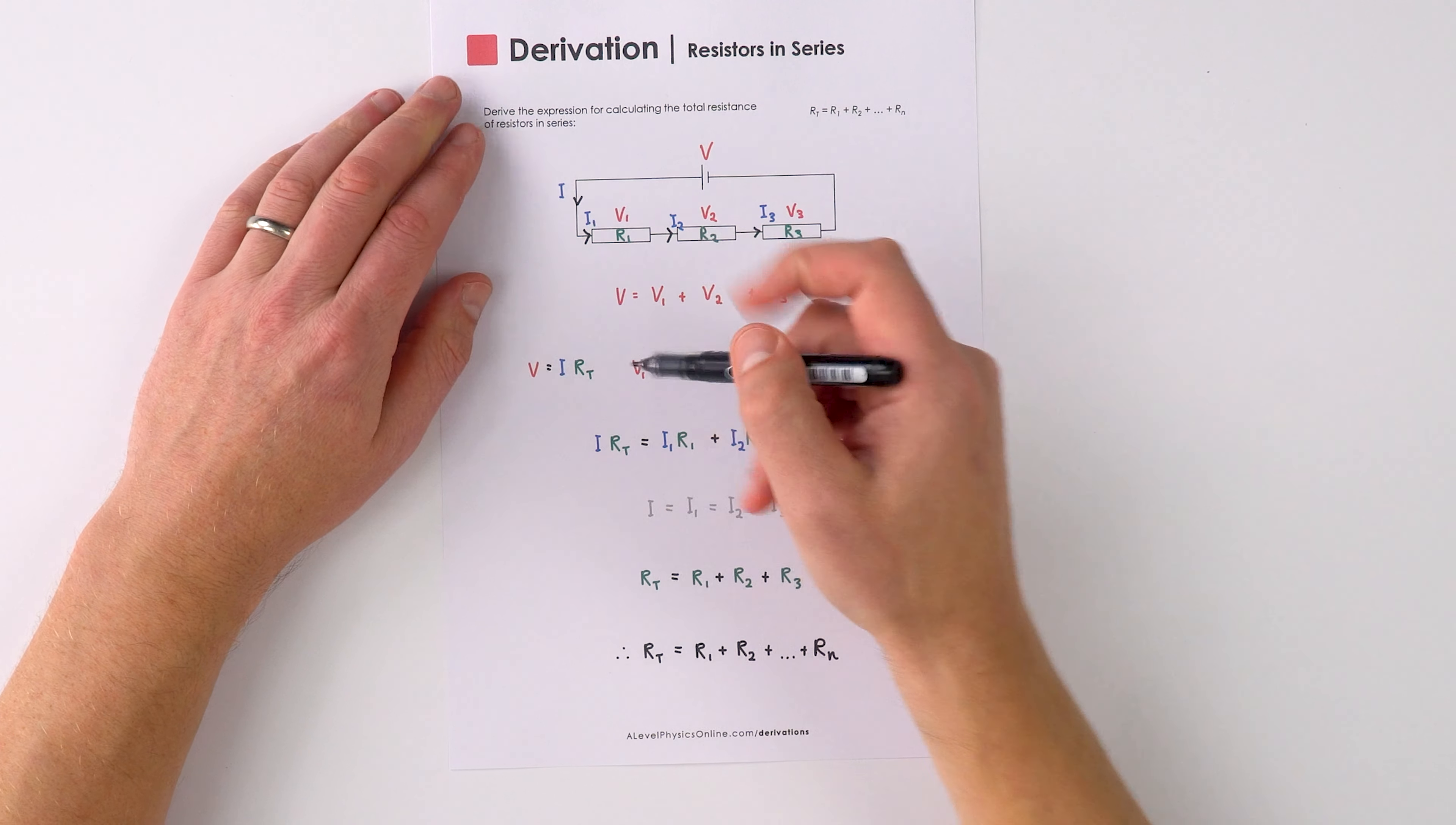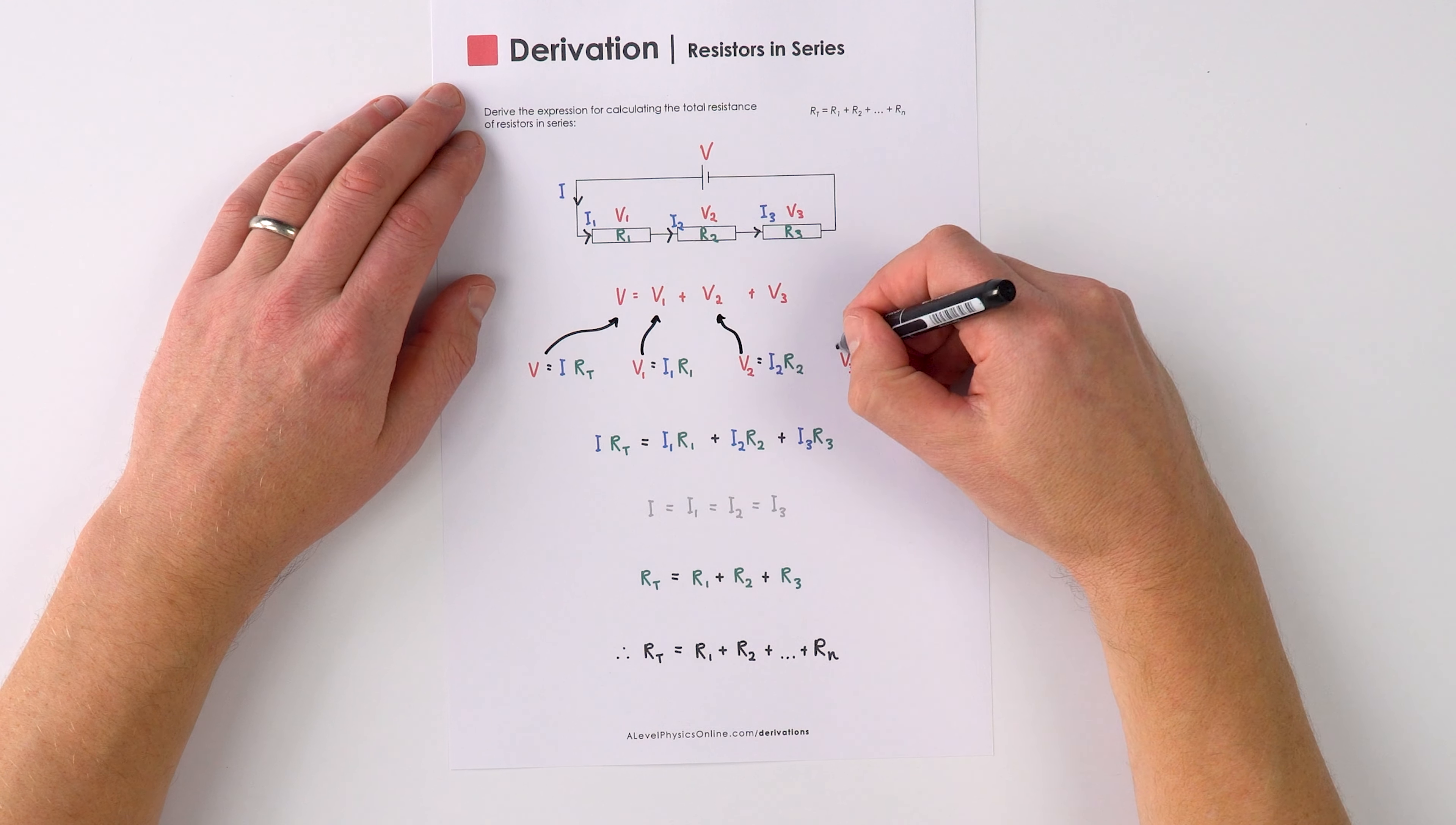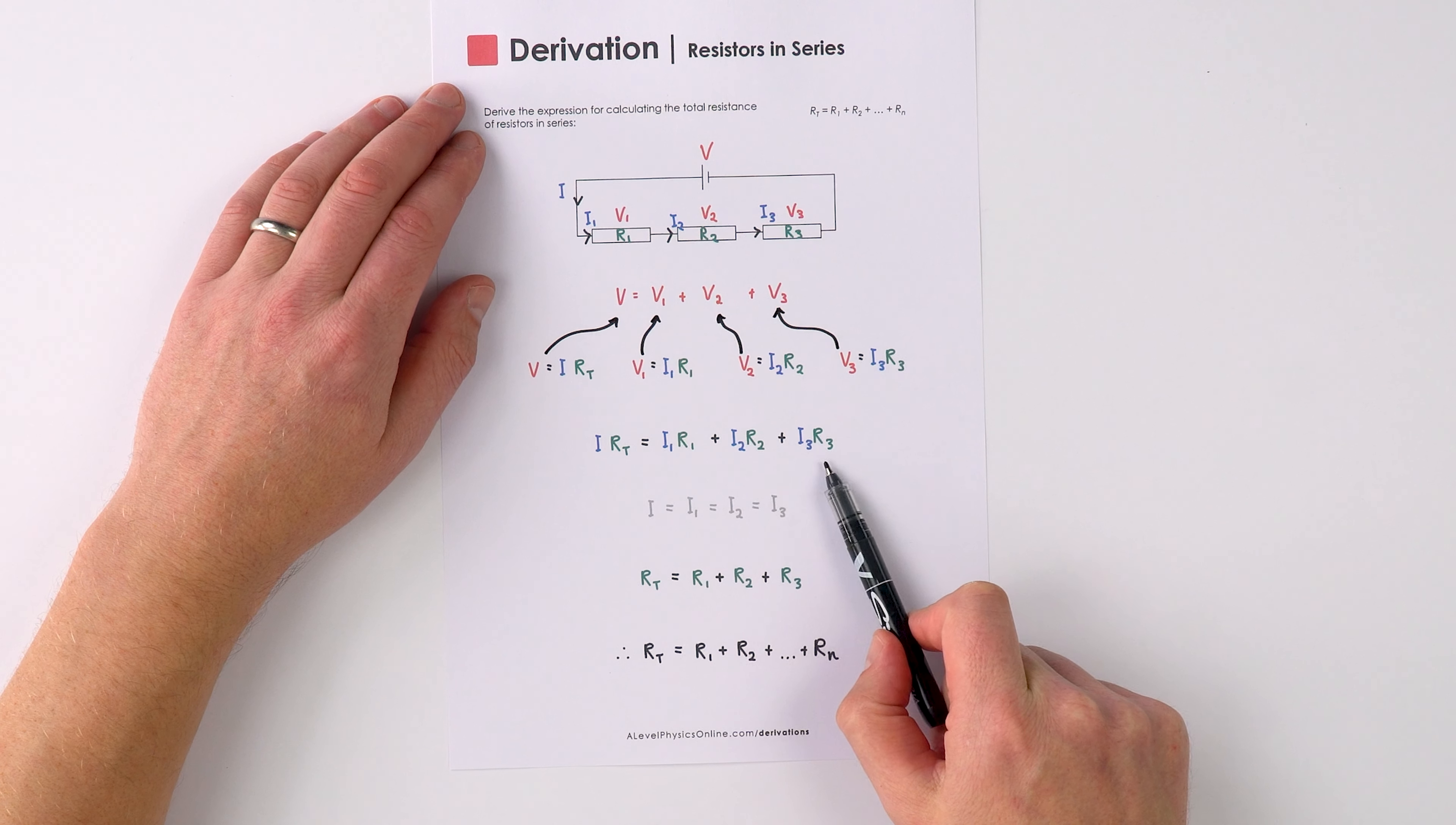So using this equation here, we can substitute all of these other equations into it like so. And when we do that, we say that IRT equals I1R1 plus I2R2 plus I3R3.